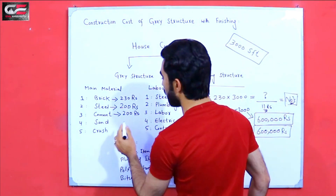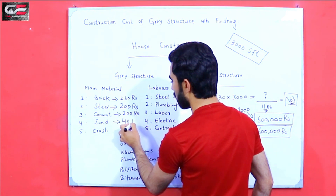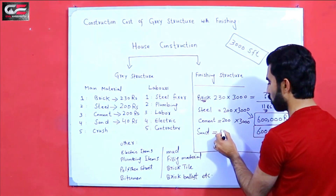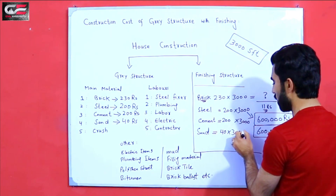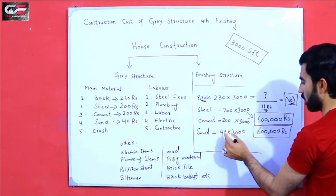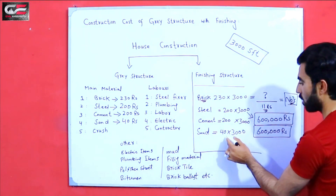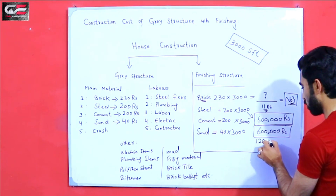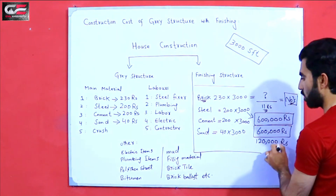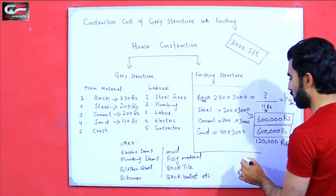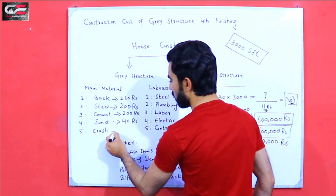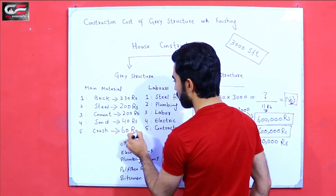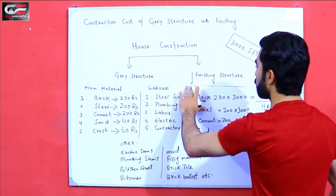The sand is 40 rupees per square feet. Multiply 40 by 3000 — you will need approximately 1 lakh 20,000 rupees worth of sand. You can do the calculation for this. The crush per square feet was 60 rupees. You can do the calculation for all these items.